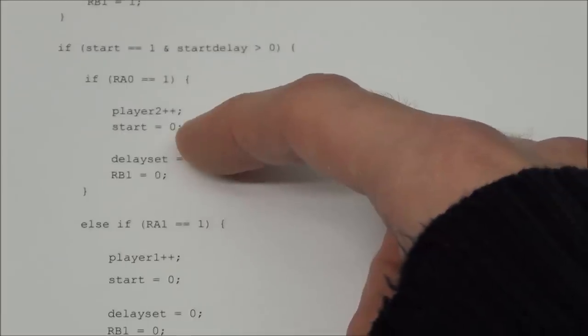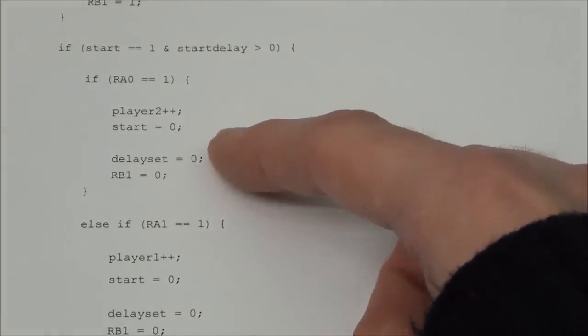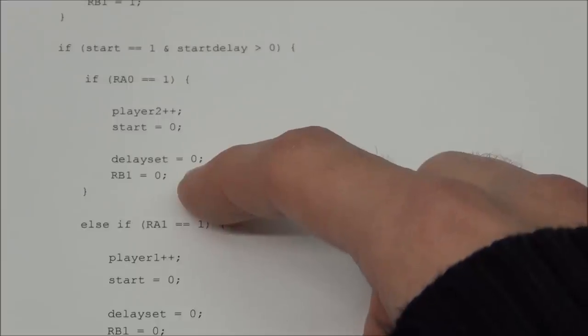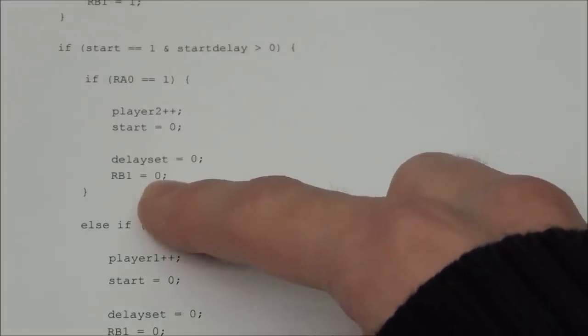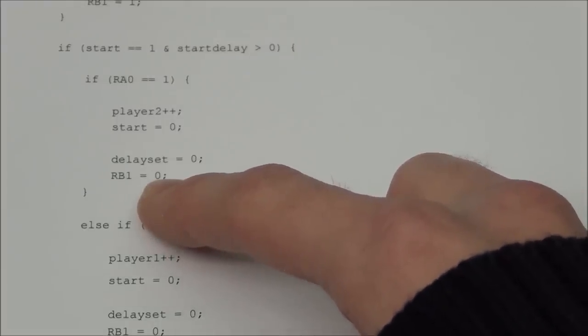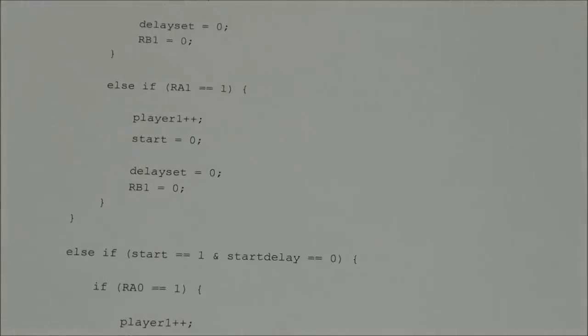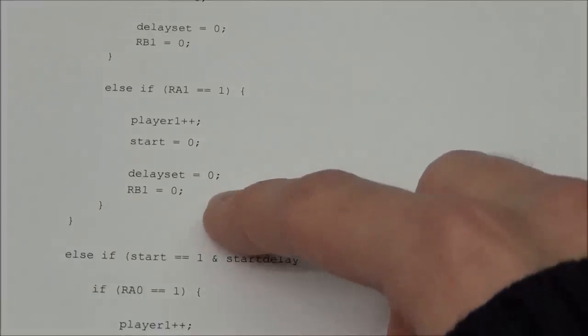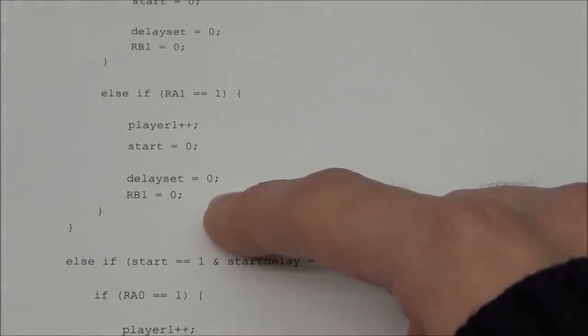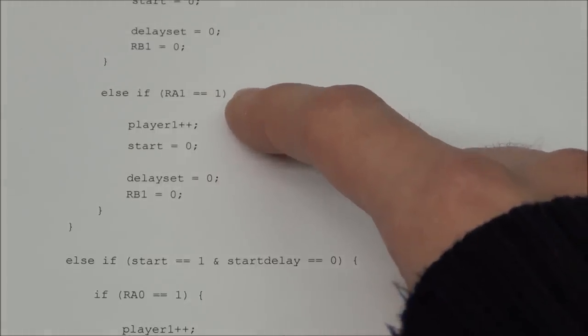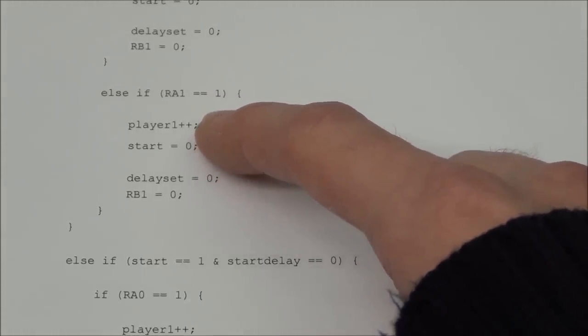And it will set start to zero because then the game has ended. It will set the delay set to zero so we can start a new game. And it will turn off the start LED as well. And we have exactly the same thing here, just for player 2 instead. So if player 2 presses the button before the start LED has lit up, then player 1 will get the point.